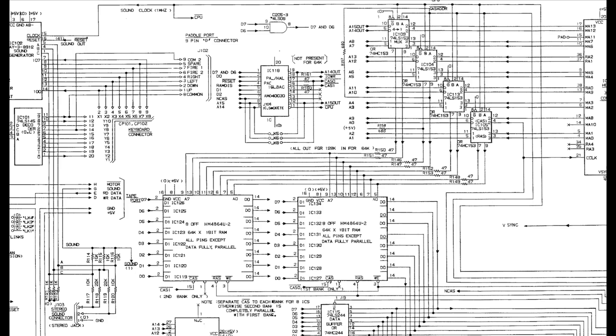So programs can map different blocks at different times to make use of more than 64k of RAM. The chip in charge of controlling the memory mapping in the different blocks is the HAL, which is a type of PAL or programmable logic array.